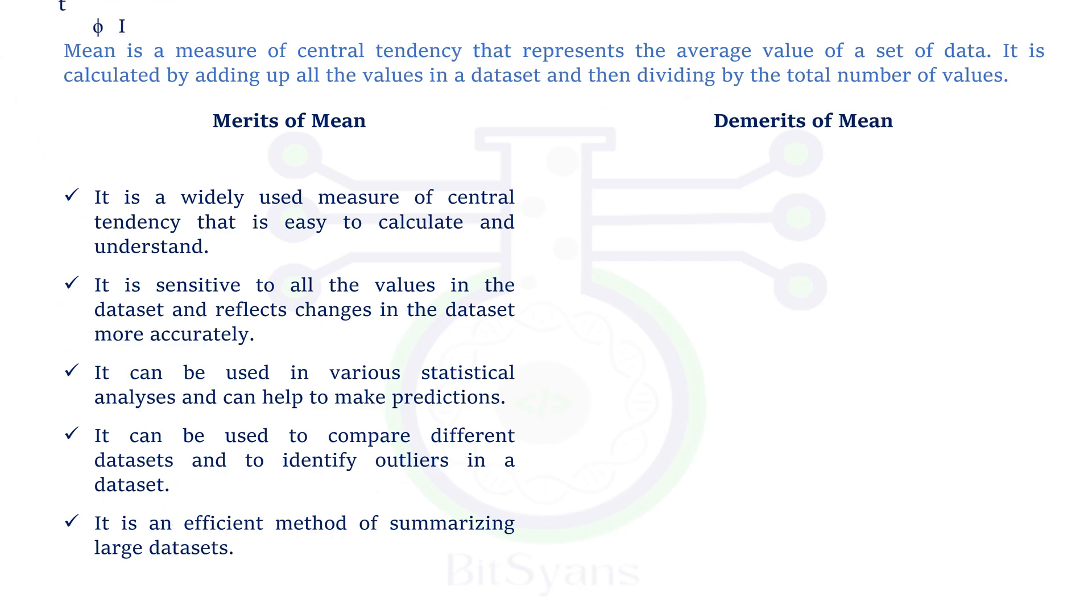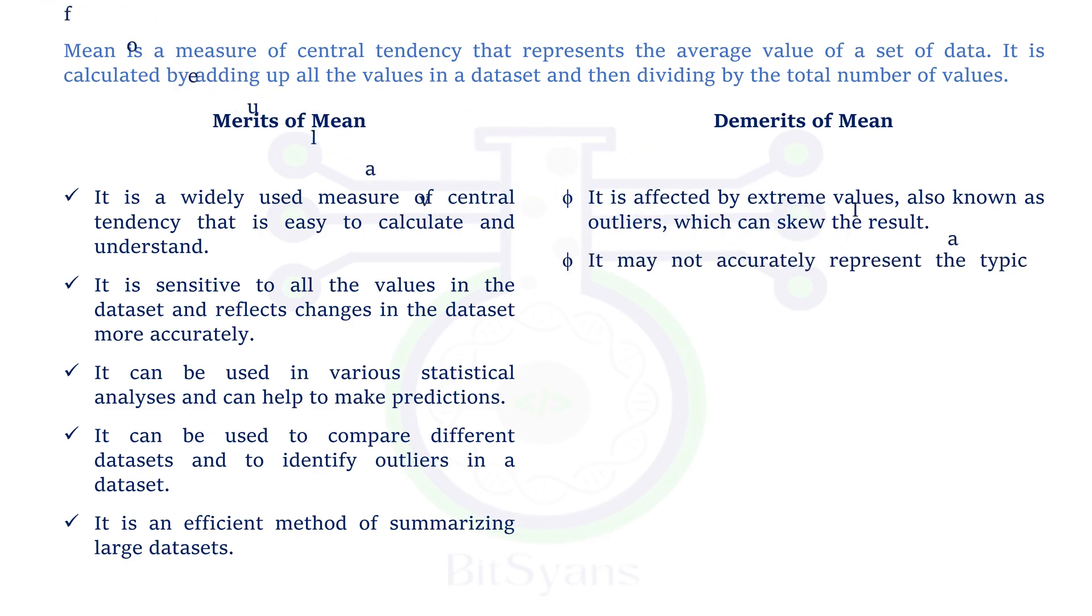Now, let's talk about the demerits of mean. It sometimes affects extreme values. Since mean is the average of all the values of a series, it is greatly affected by extreme fluctuation. Thus, it is not a true representative value of all the items of a series.